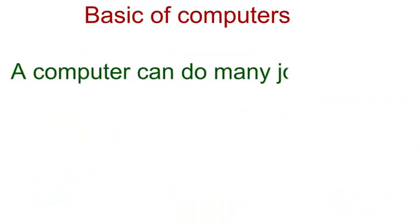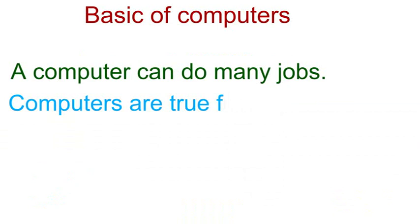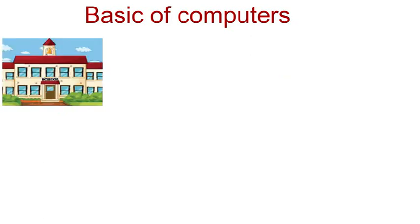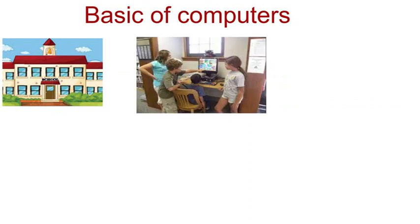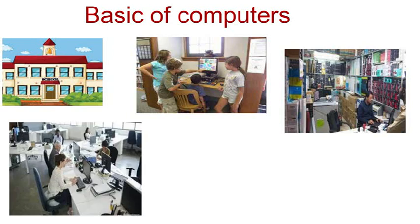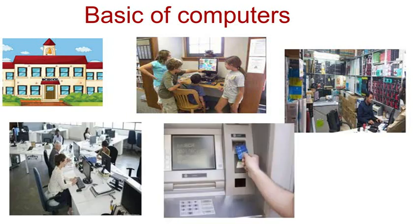A computer can do many jobs. Ek computer bhoot sari kama asani se kar sakti hai. Computers are true friends of humans — they do whatever we command them to do. They are used everywhere like schools, homes, shops, offices, banks, hospitals.